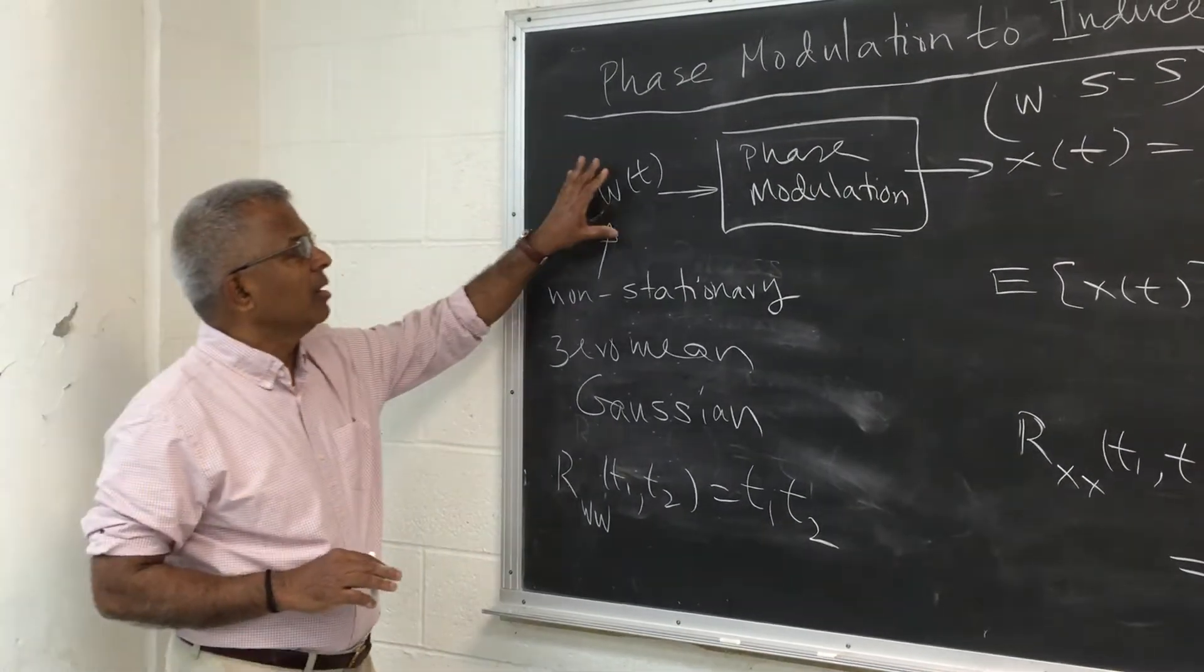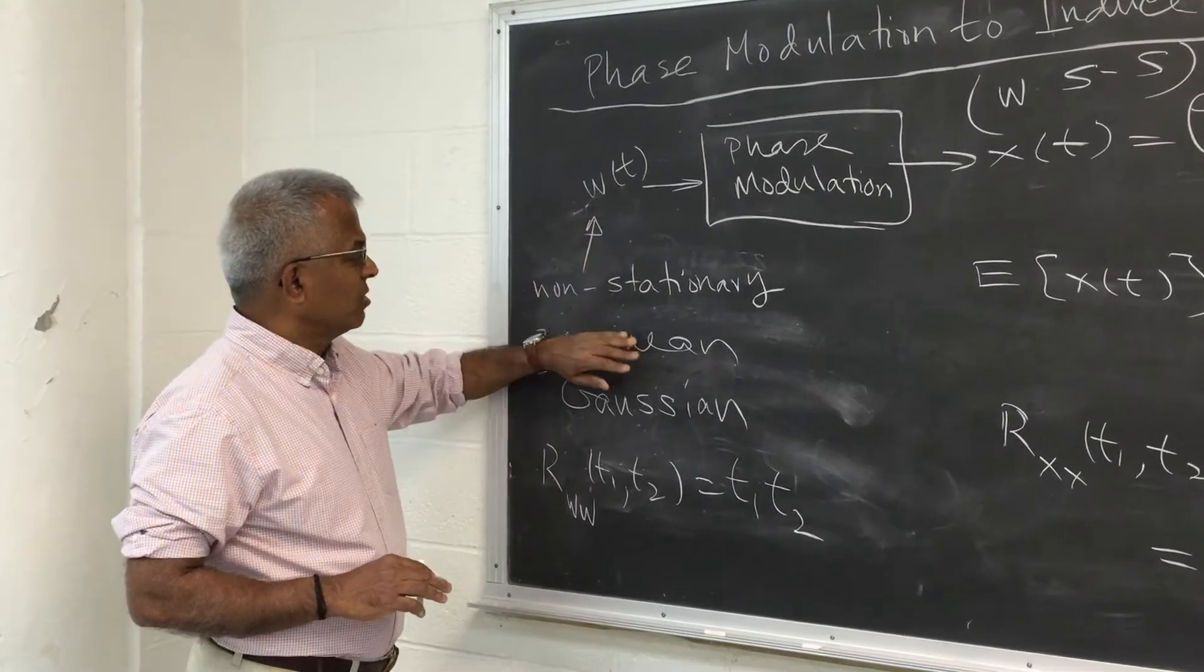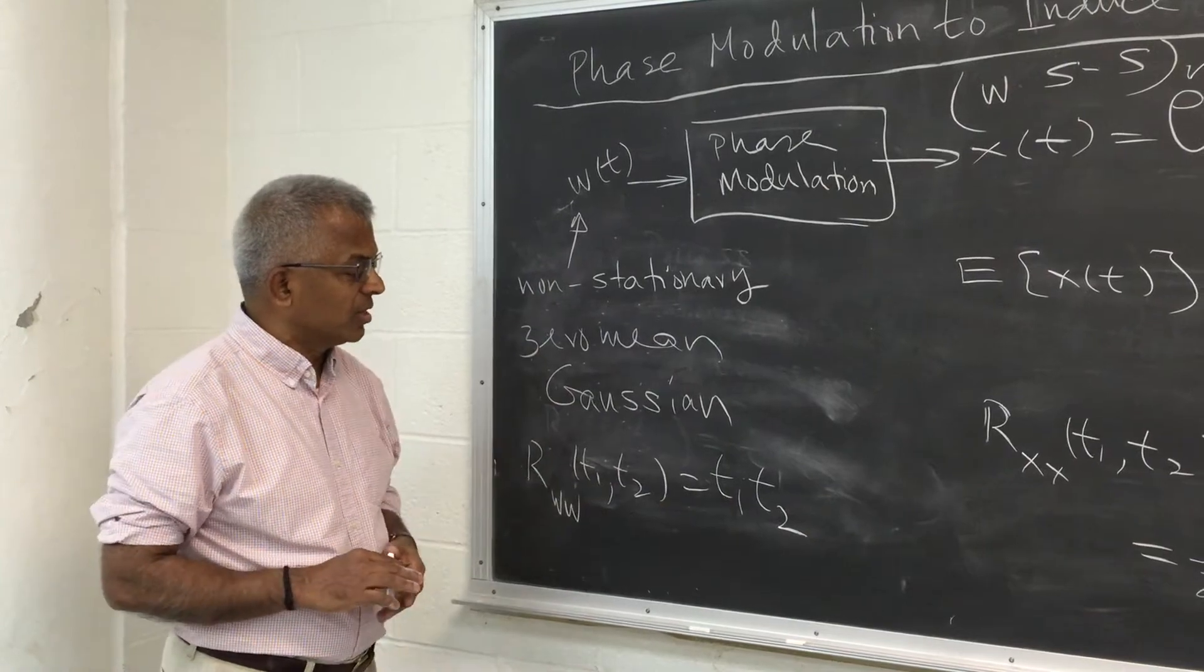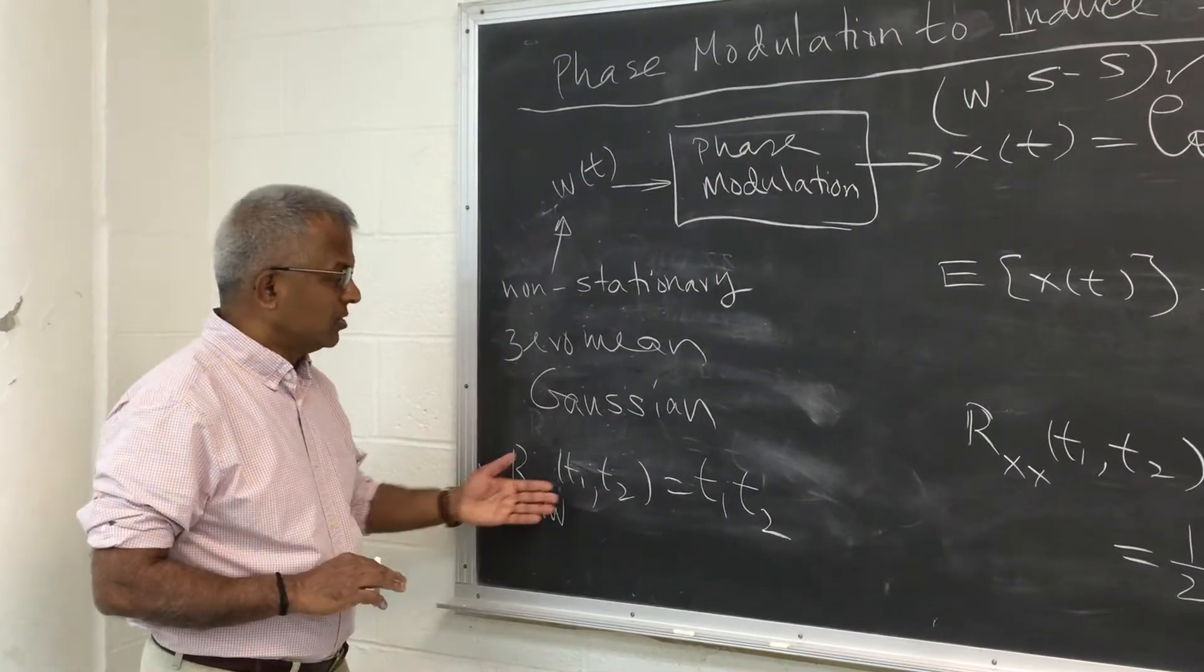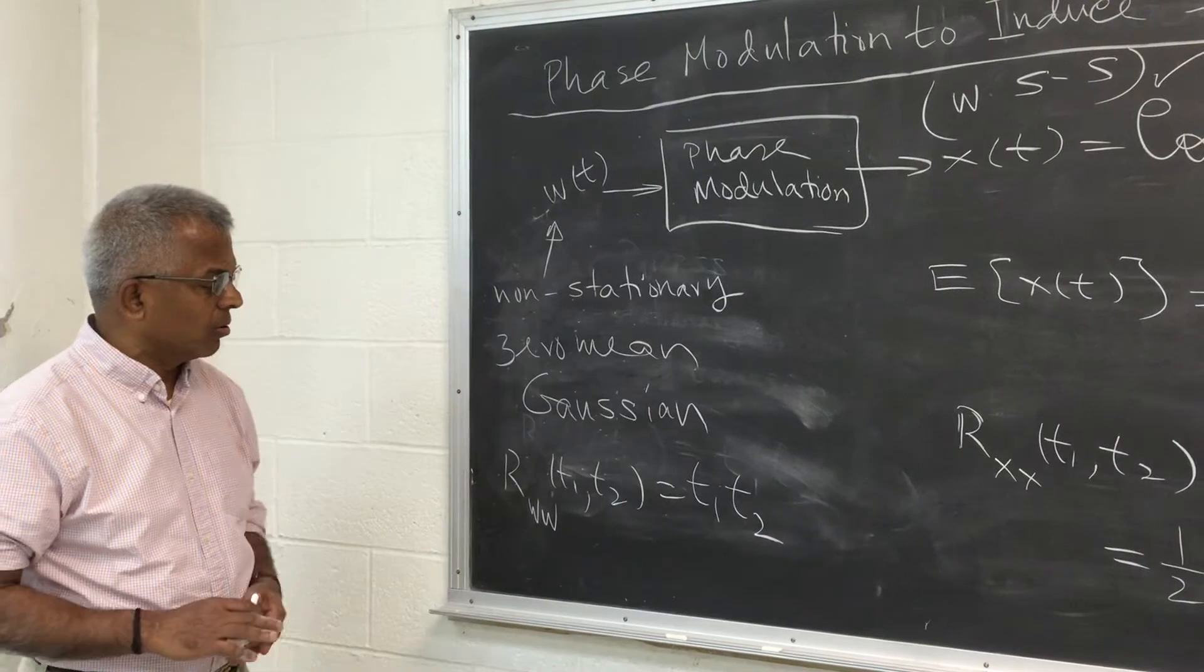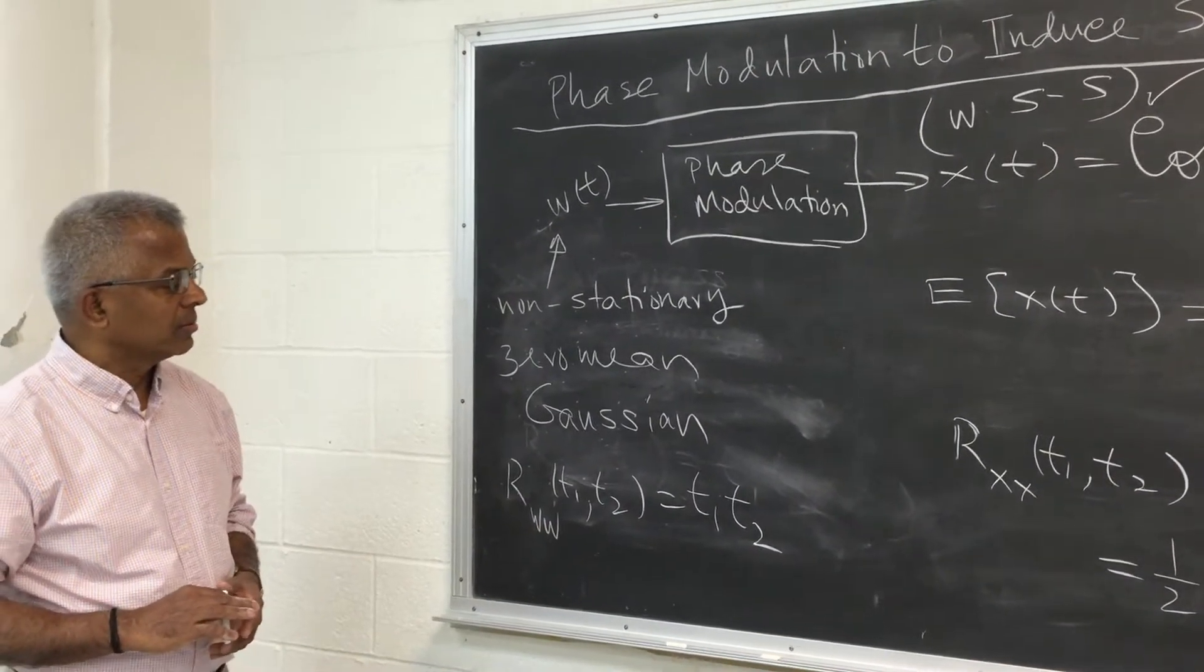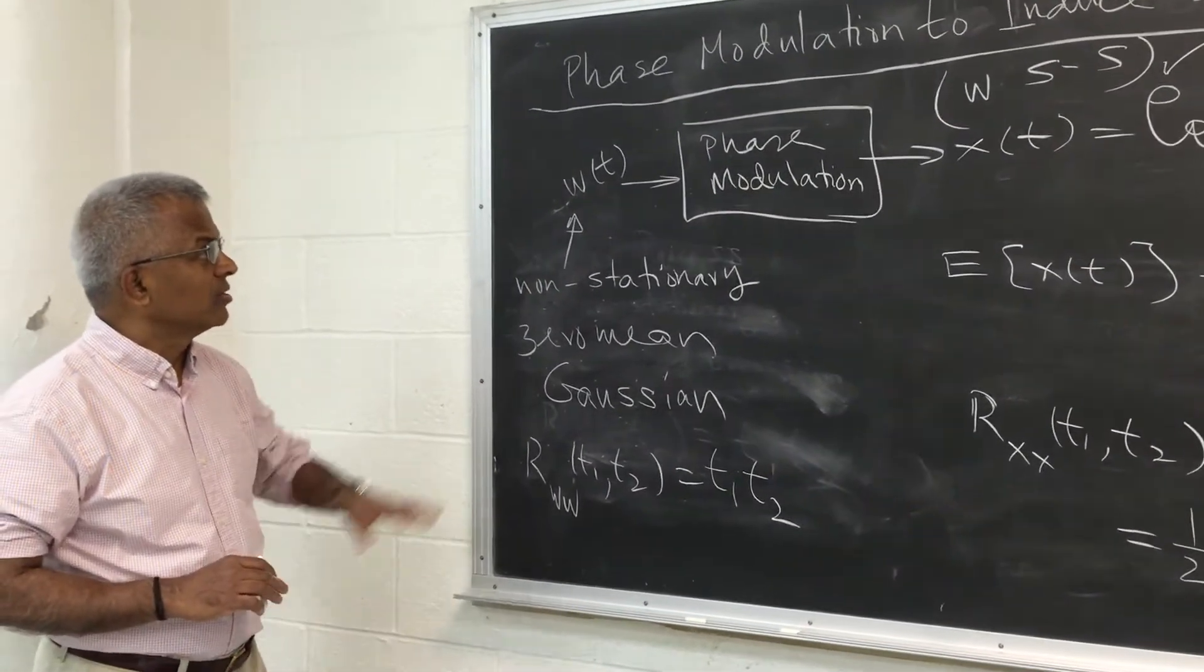At the input we have a non-stationary stochastic process which is zero mean Gaussian with autocorrelation function r(t1,t2) equal to the product of t1 and t2. This is certainly an autocorrelation function because if you build the matrix out of this rijs, it's going to be a rank 1 matrix.